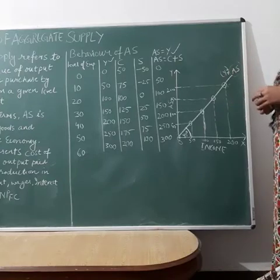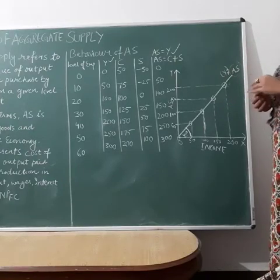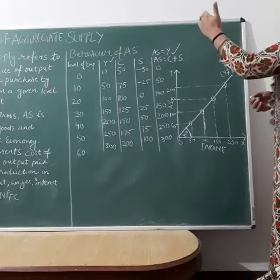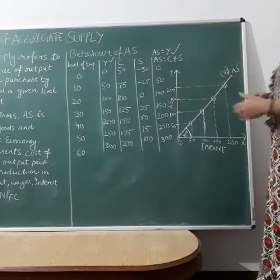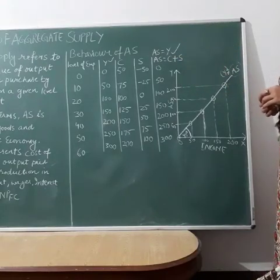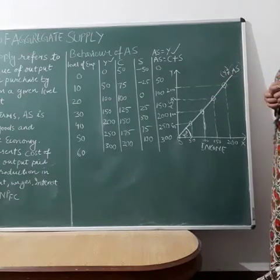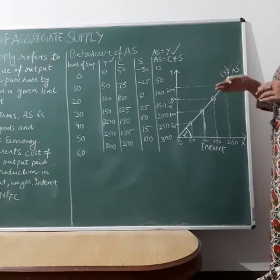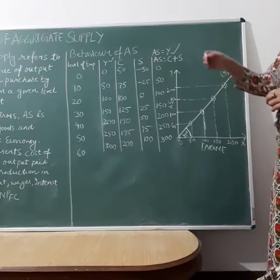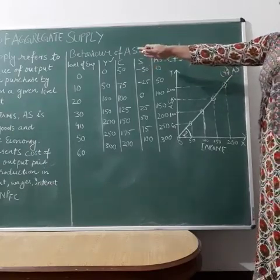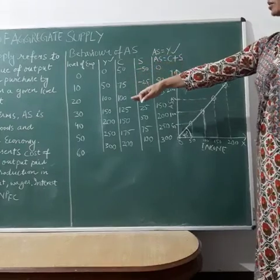Consumption plus savings is equal to aggregate supply. We have created a schedule — the same schedule as we created for aggregate demand — and using this same schedule we will find out aggregate supply. The level of employment starts from 0, then 10, 20, 30, 40, 50, and 60.